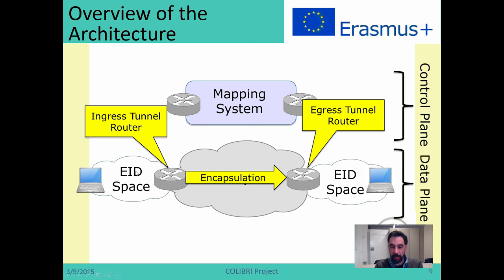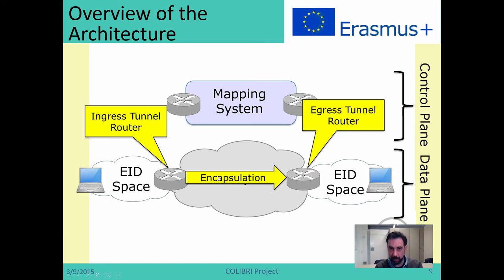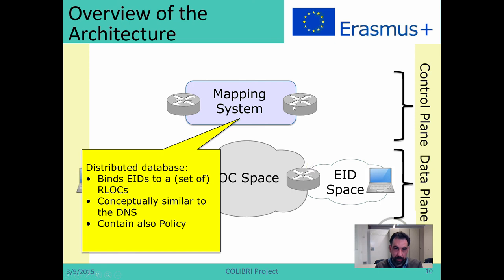How do we communicate the EID space with the RLOC space? We use LISP-capable routers called tunnel routers. We have either Ingress Tunnel Routers (ITRs) or Egress Tunnel Routers (ETRs) — they have two different names because they encapsulate packets from one to another. ITRs connect the EID space with the RLOC space in one direction, encapsulating packets and forwarding them to ETRs, which in turn interconnect the RLOC space with the EID space. Whenever a router implements both functionalities it's called an xTR. The mapping system maps EIDs to a set of RLOCs — it's a distributed database mapping EIDs to RLOCs.